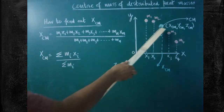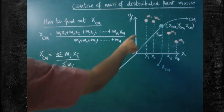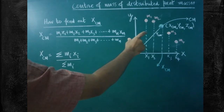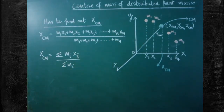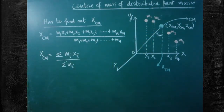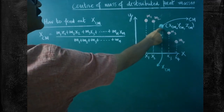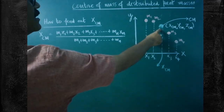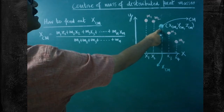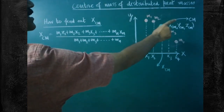The center of mass is represented by the letters CM. These masses are assumed to be in a three-dimensional coordinate system. There are n number of masses — just four masses are taken here for explaining this concept. For these n number of masses, we have to find out where the center of mass is located.